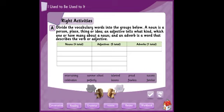Now let's put the words into the correct places. The first one is entertaining - entertaining is an adjective, ممتع او مسلي. Summer school, مدرسة صيفية, is a noun. Talented, موهوب, is also an adjective. Proud, فخور, is an adjective. Success means ناجح and it is a noun, not an adjective. If I want to turn success into an adjective, I add F-U-L at the end and it becomes successful.